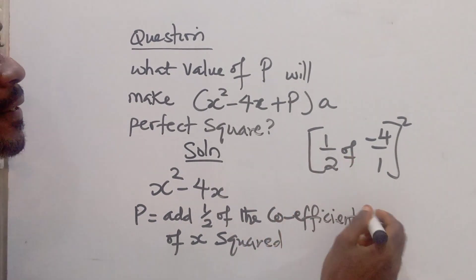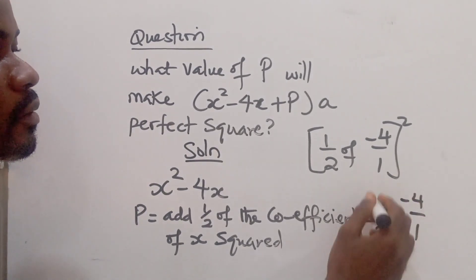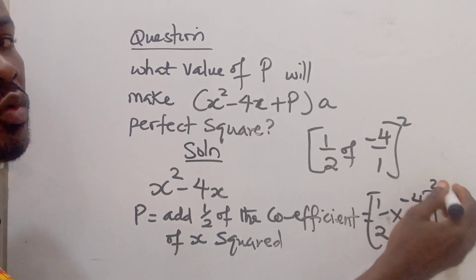So we have that as half times what? So minus 4 over 1, all this was squared.